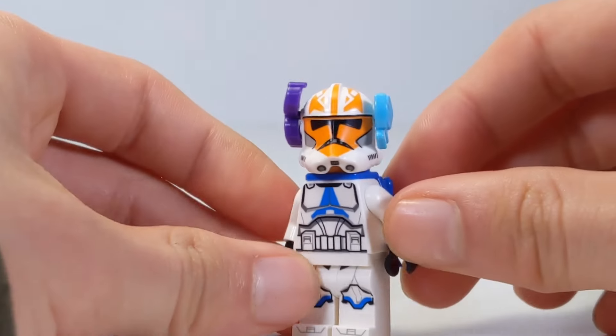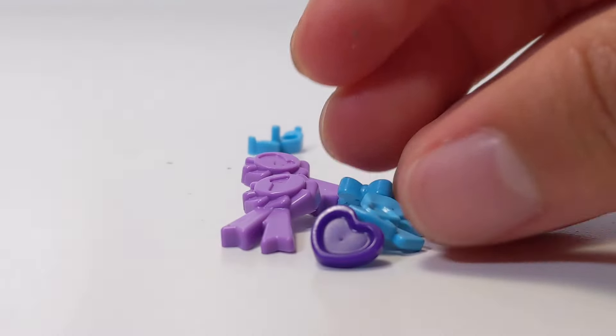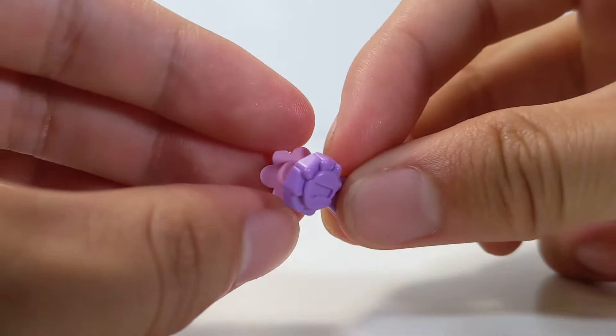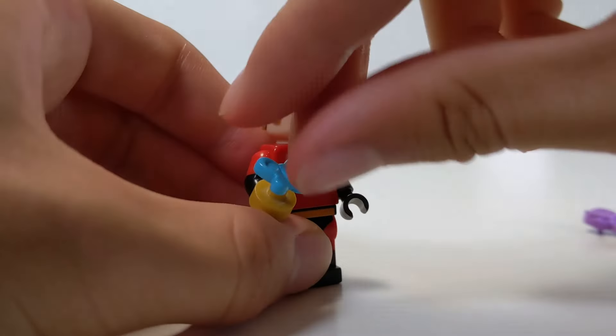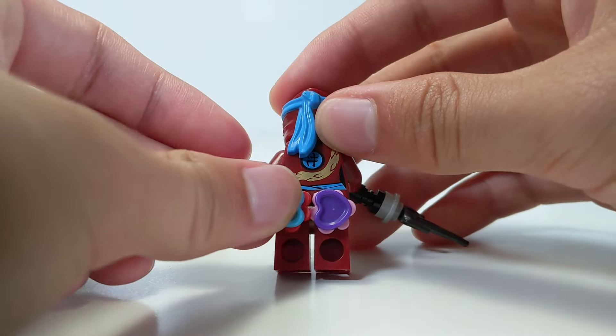Also, since the LEGO Friends accessories have pins, they can connect to flower pieces or modified one by one tiles, which means that minifigures can now hold them. You can also add them to various other builds.